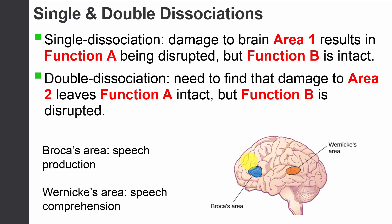That's a single dissociation, and it's one piece of the puzzle. But if we really want to make the argument that there's one area of the brain responsible for producing speech, and a completely separate area responsible for comprehending speech, we need a double dissociation. Wernicke's hanging out in his office noticing all these patients, but unbeknownst to him, there's also a doctor in another area — Dr. Broca — who notices the exact opposite pattern.